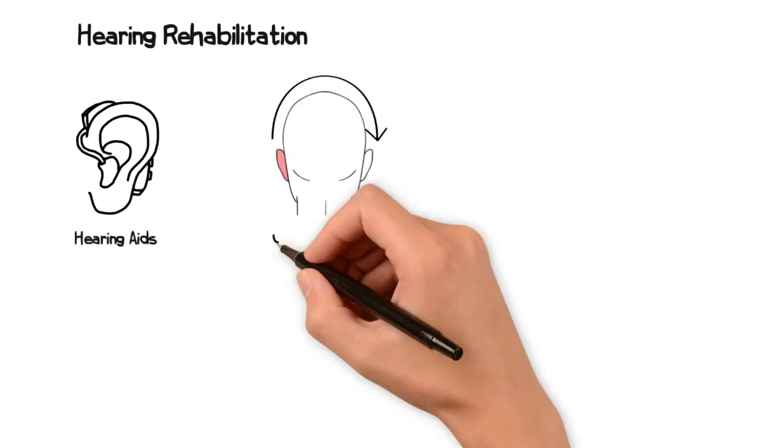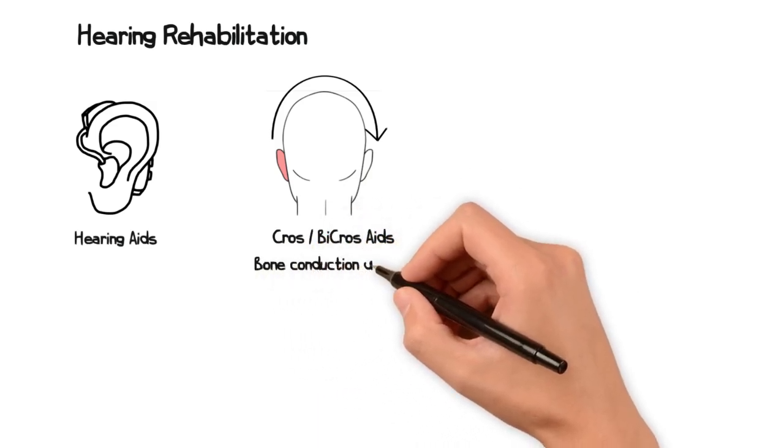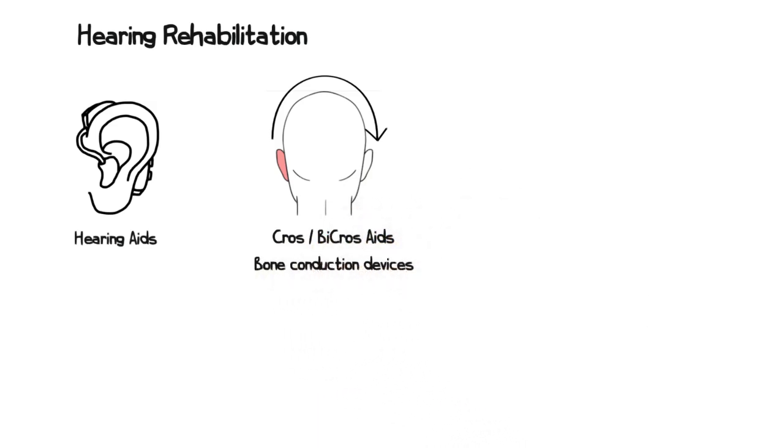With severe or profound losses, options to transmit the sound from the affected side to the unaffected side include bi-cross aids or bone conduction implants. These can help to reduce head shadow and listening effort.